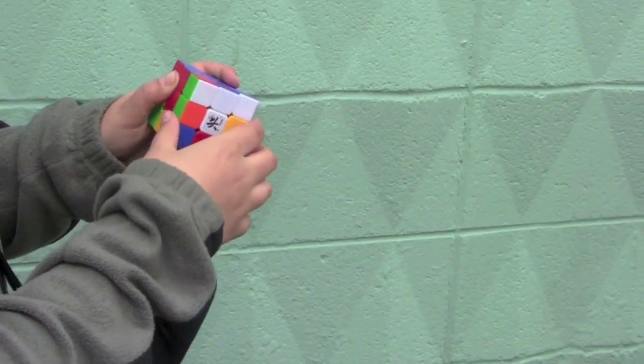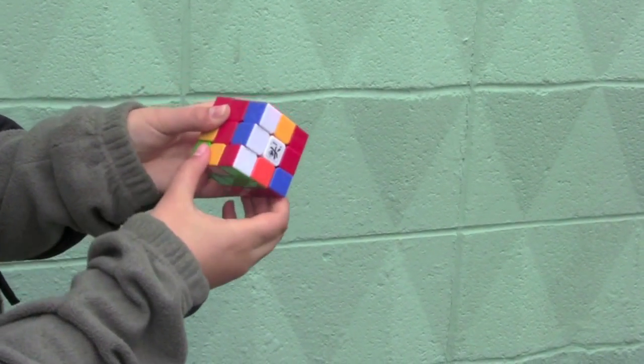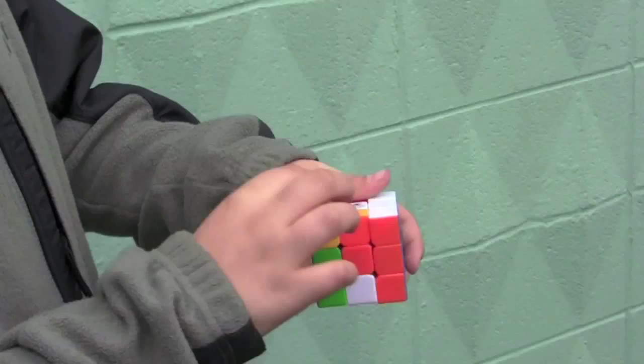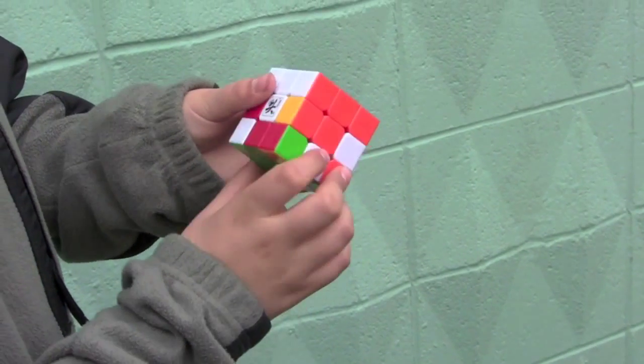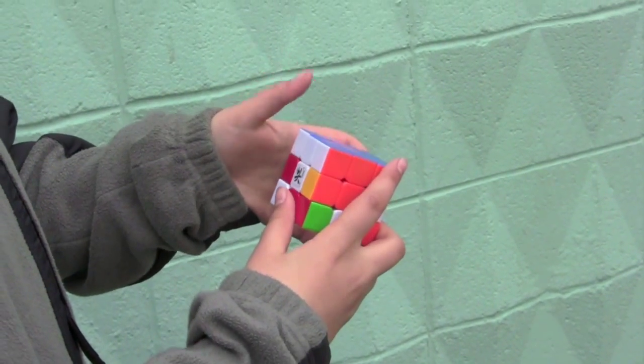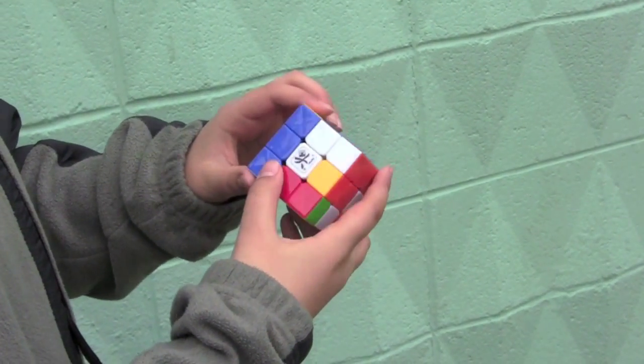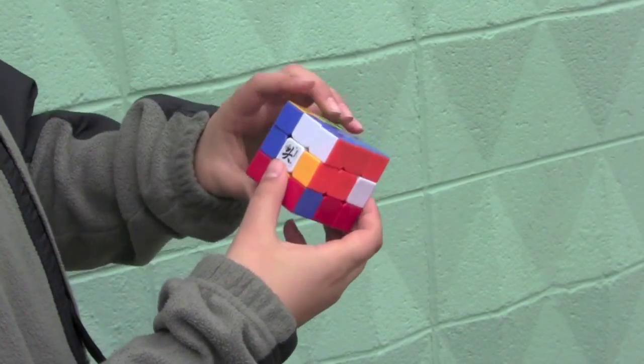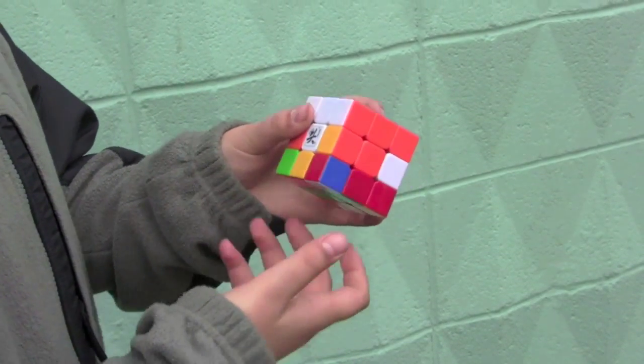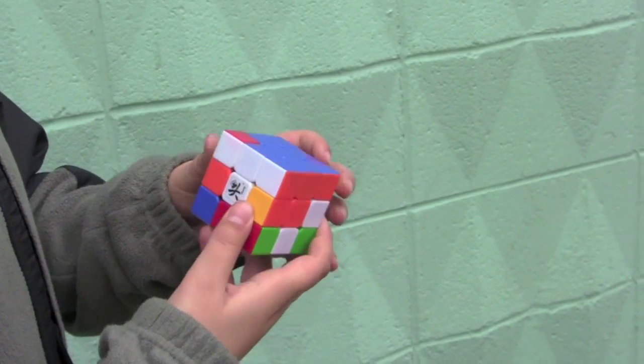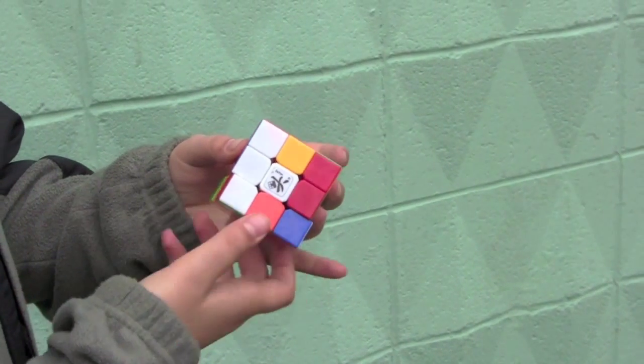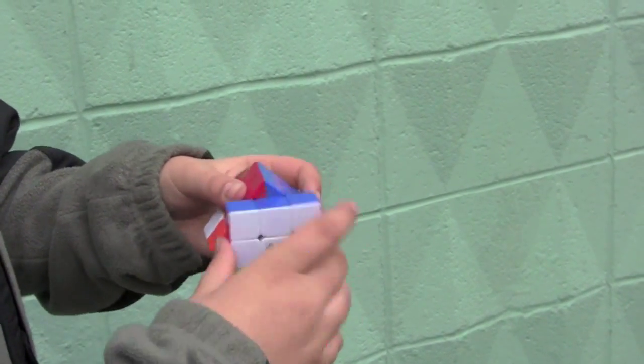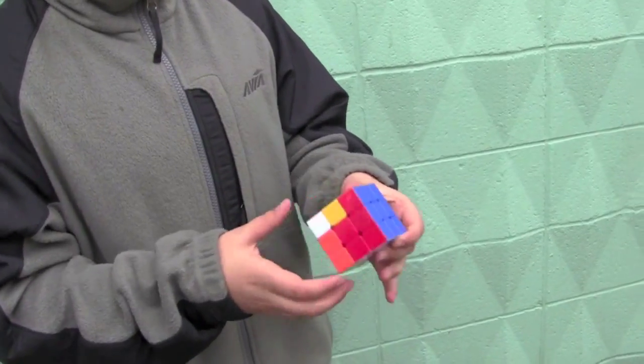So it's here. Down, bottom, up, make a T. And then D, L, D D, L prime, D prime, turn the cube, R prime, D prime, R prime. I'll show you the notation once again.